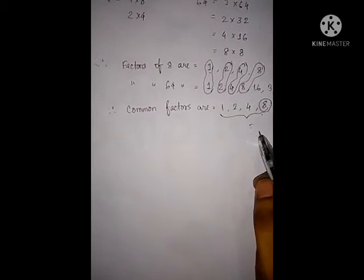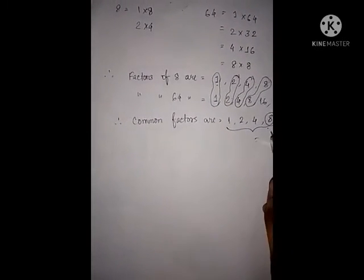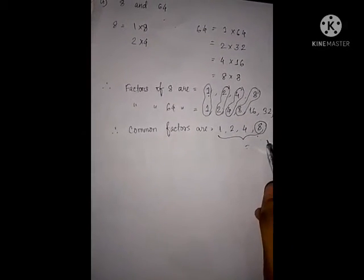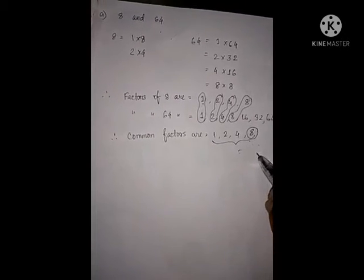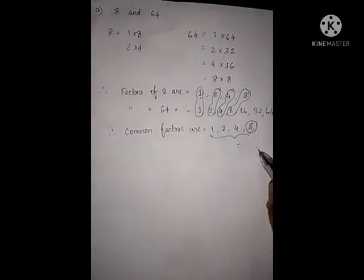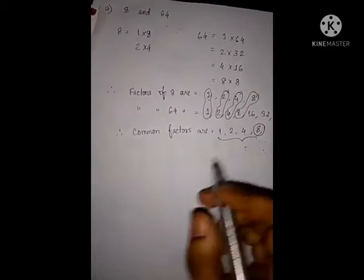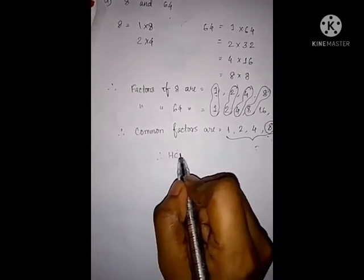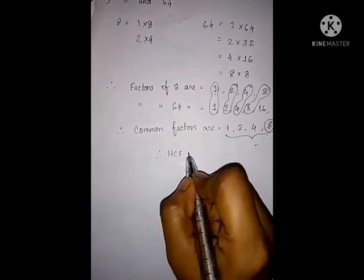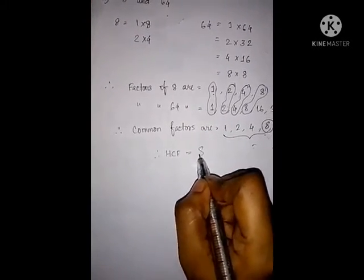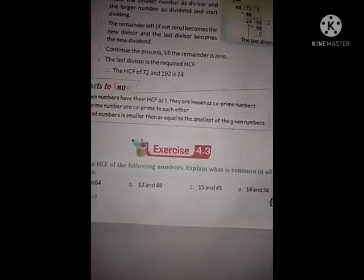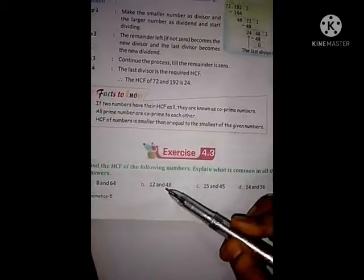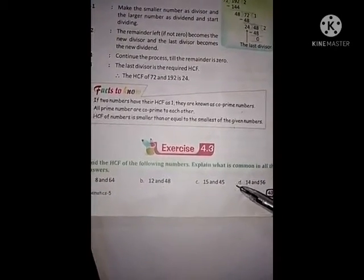So, 8 is the HCF of 8 and 64. As we know, the greatest common factor is the HCF between the numbers. Therefore, HCF is equal to 8. Like this, find out the HCF of the remaining numbers.